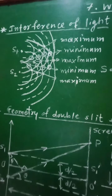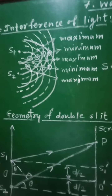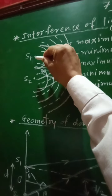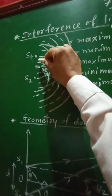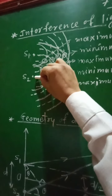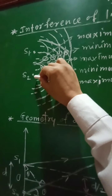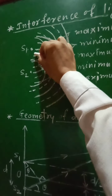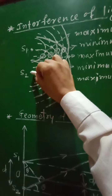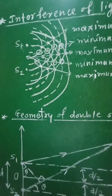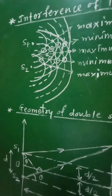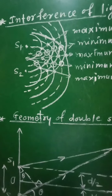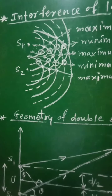In order to study the interference of light, let us consider two sources of light, S1 and S2, which are coherent sources of light separated by a short distance. Both these sources of light S1 and S2 will emit light waves in all possible directions.